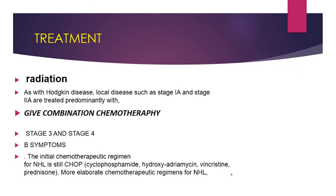The treatment consists of radiation and chemotherapy. Radiation is reserved for early stage disease — stage 1A and stage 2A. Combination of chemotherapy and radiotherapy is given for stage 3 and stage 4 disease. If B symptoms are present, we give chemotherapy. The initial chemotherapeutic regimen is CHOP.